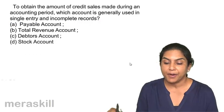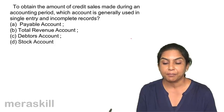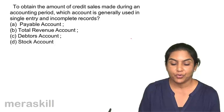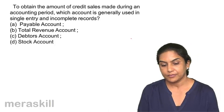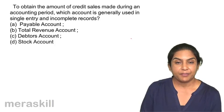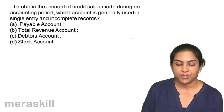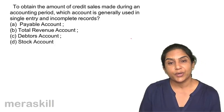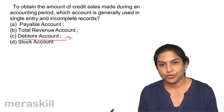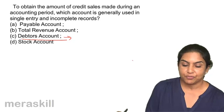To obtain the amount of credit sales made during an accounting period — options are: payable account, total revenue account, debtors account, and stock account. The payable account gives us purchases; total revenue account doesn't give credit sales specifically; stock account is not generally prepared separately. But the debtors account could give you the balance of sales — the balancing figure could be sales if you know opening debtors, closing debtors, and collection from debtors. Correct answer should be C, debtors account.